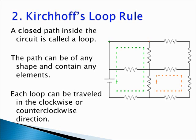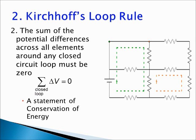Kirchhoff's loop rule applies to any closed path inside the circuit called the loop. The only requirement is that the loop must be closed. The loop can have any shape and contain any elements or no elements at all, and it can be traveled in either the clockwise or counterclockwise direction. The loop rule states that the sum of the potential differences across all elements around this loop must be zero, reflecting conservation of energy inside the loop.